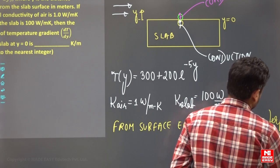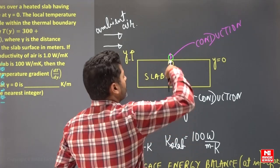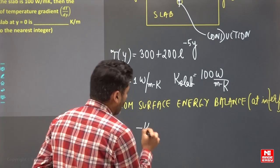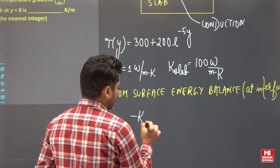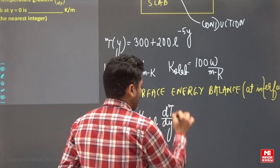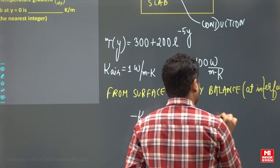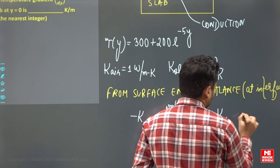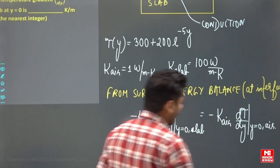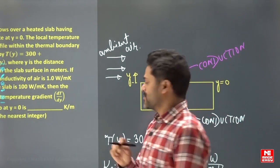Apply the energy balance at the interface. Conduction is occurring on both sides. The rate of conduction is given by Fourier's law: minus k_slab times dT/dy at y=0 in the slab equals minus k_air times dT/dy at y=0 in the air. This is the surface energy balance applied at the interface between these two molecules.